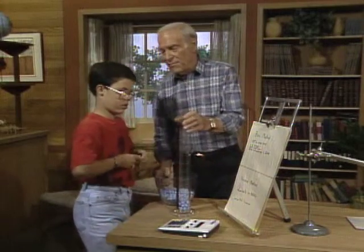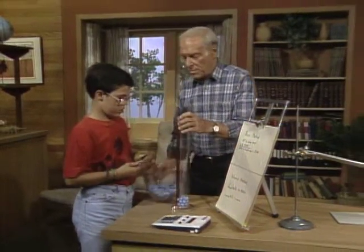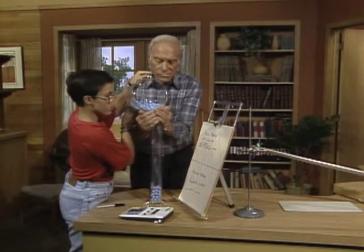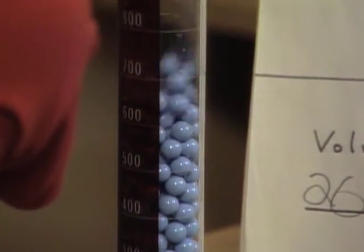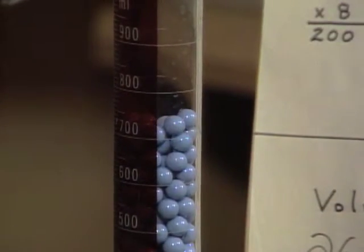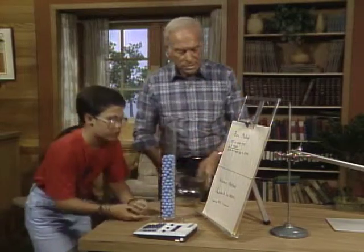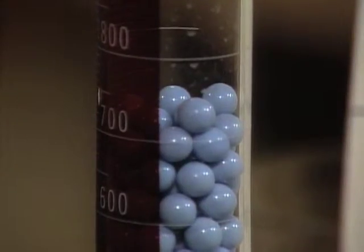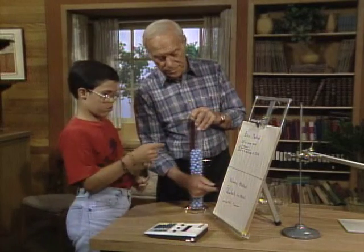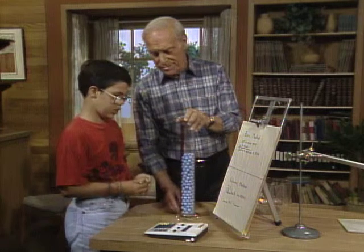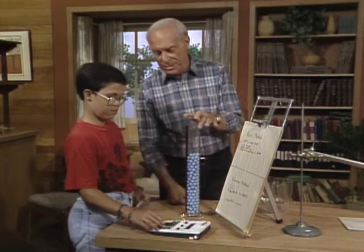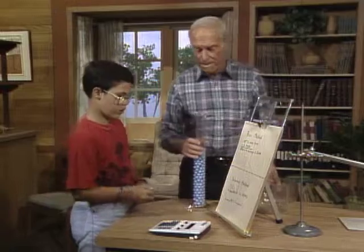Now all we have to do is get the total volume of all the balls, right? So let's pour them in. What's the total volume? Well, it's about 750 milliliters. If there's 26 balls per 100 milliliters and there's 750 milliliters, then you'd have to multiply 26 by 7.5. So what do you got? I've got 195.